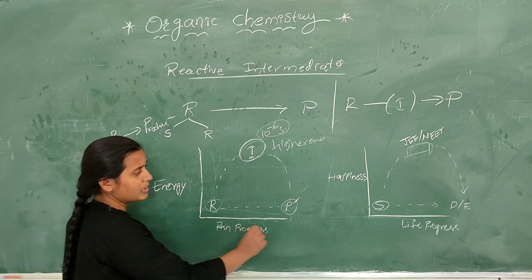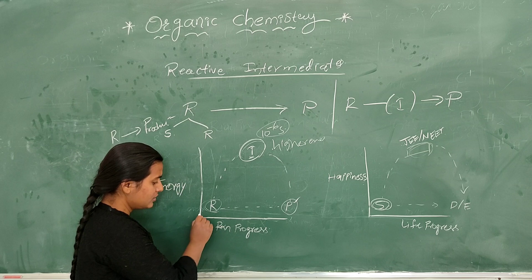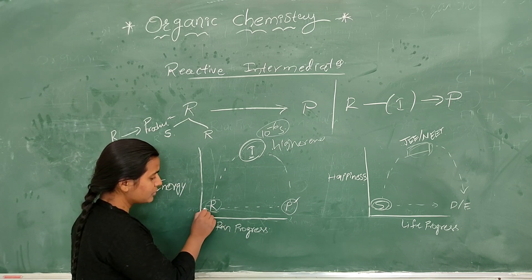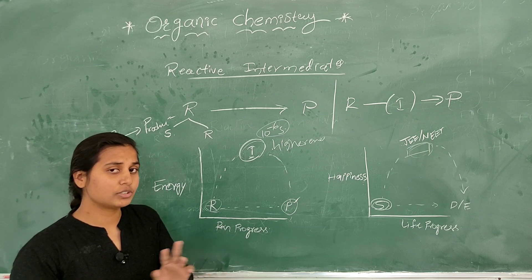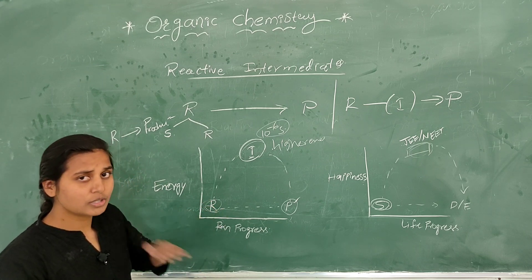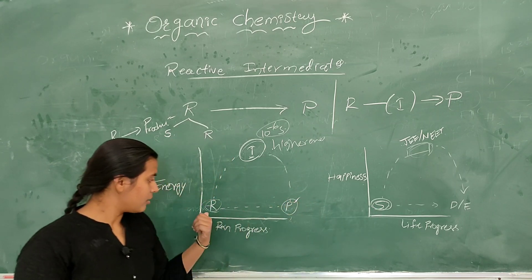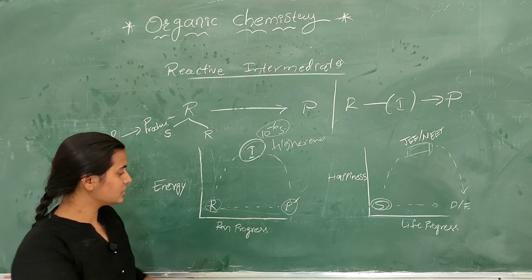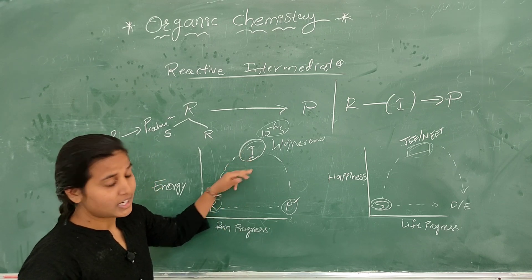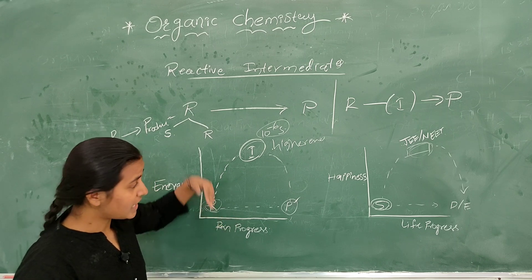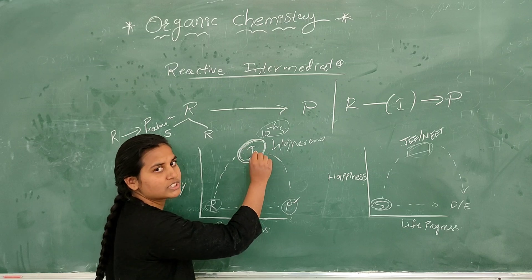A compound is stable in a lower energy state. Stability is directly proportional to energy — a compound is stable at lower energy. When the same reaction occurs, it reaches a higher energy state and then comes back down to a lower energy state. It is correlated with another stage.